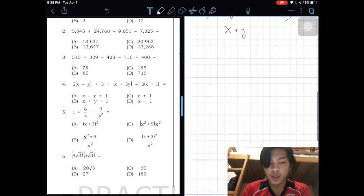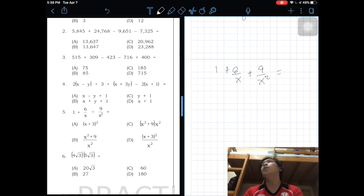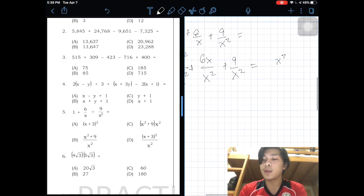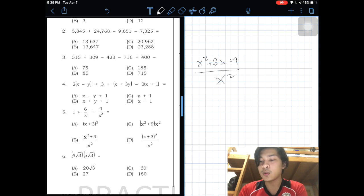For number 5, it is 1 plus 6 over x plus 9 over x squared. The rule in adding fractions, the denominator must be the same. To make it x squared, add x to the second term making it 6x over x squared. So it's the same. Plus 9 over x squared. To make the denominator uniform, x squared. This will be x squared plus 6x plus 9 all over x squared.